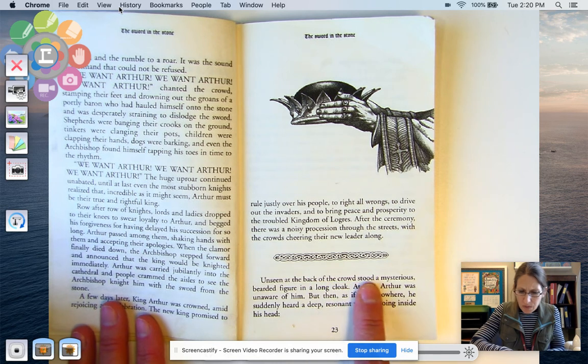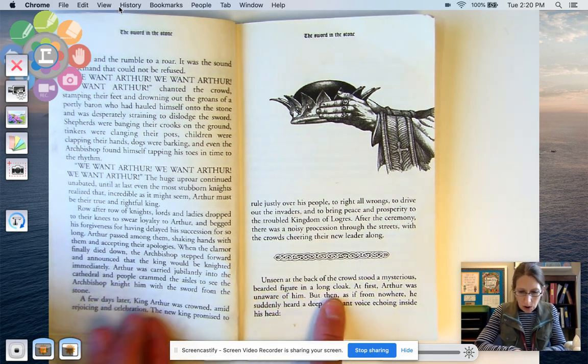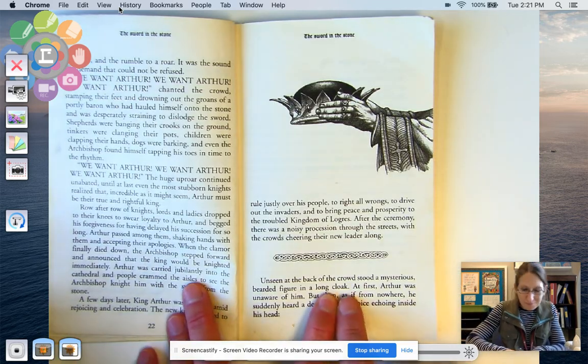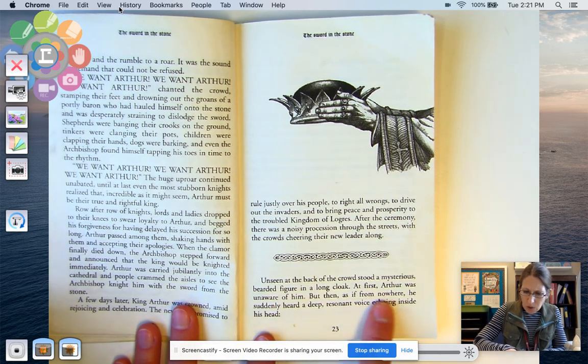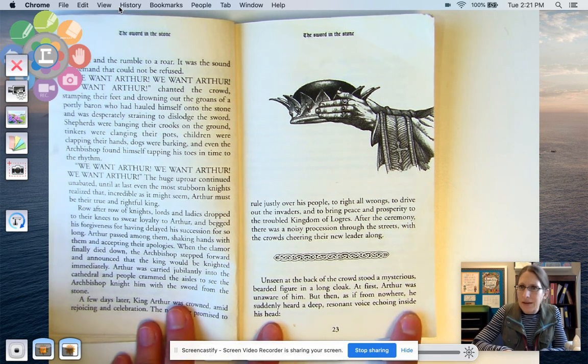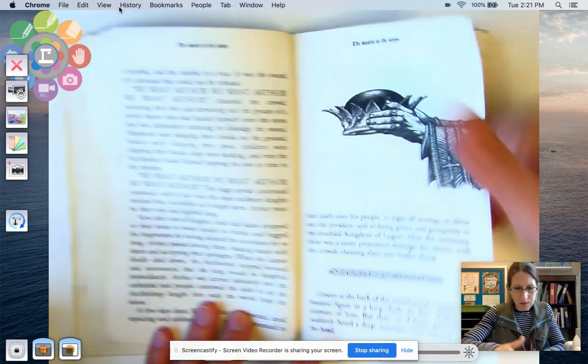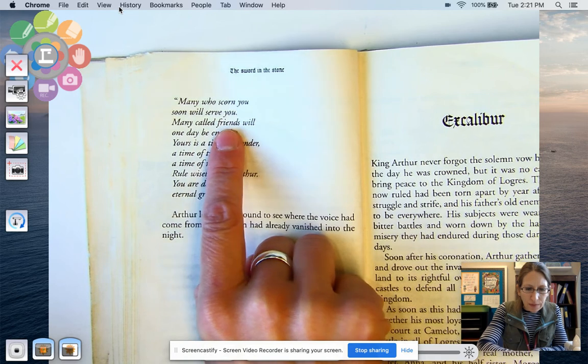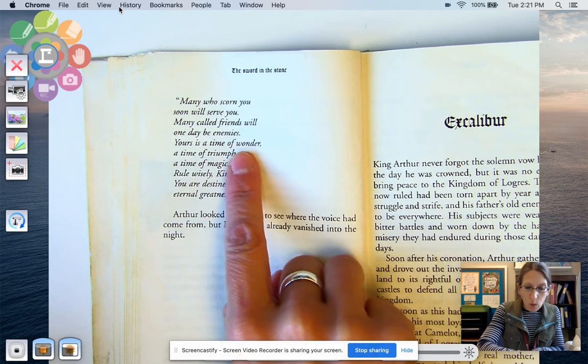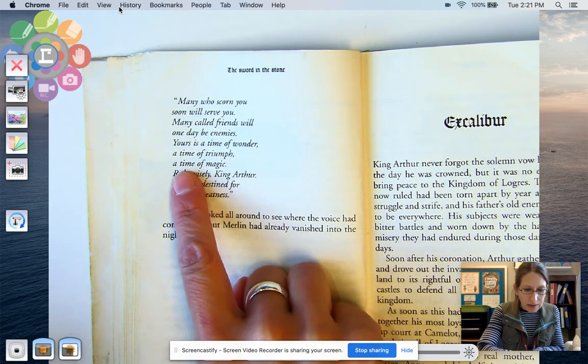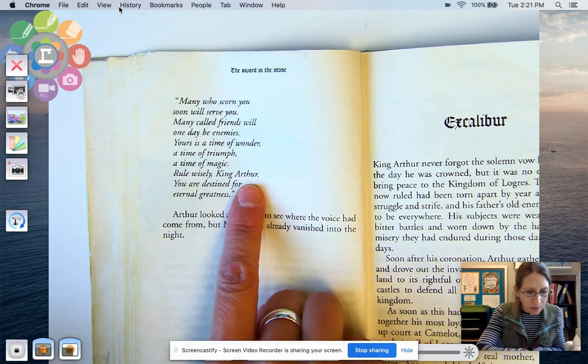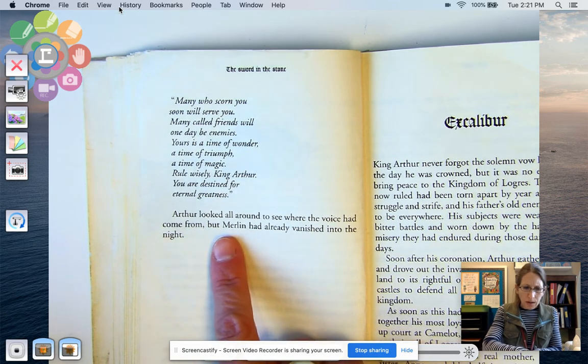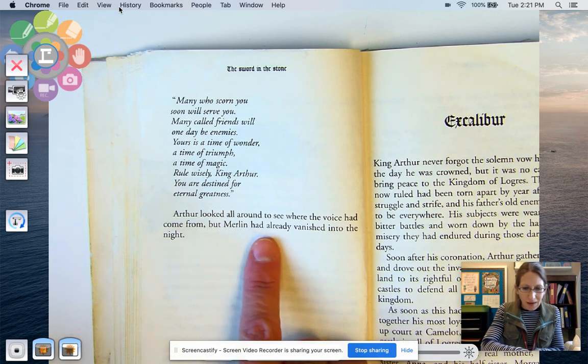Unseen, at the back of the crowd stood a mysterious bearded figure in a long cloak. Is anybody else predicting? Ooh, I'm predicting about this mysterious figure. At first, Arthur was unaware of him. But then, as if from nowhere, he suddenly heard a deep, resonant voice echoing inside his head. It's like, do you hear that? I hear something. Many who scorn you soon will serve you. Many called friends will one day be enemies. Yours is a time of wonder, a time of triumph, a time of magic. Rule wisely, King Arthur. You are destined for eternal greatness. Arthur looked all around to see where the voice had come from.